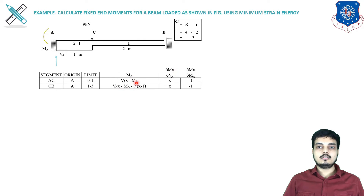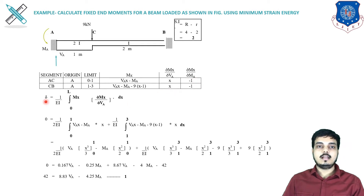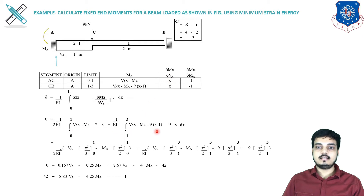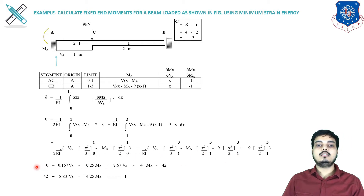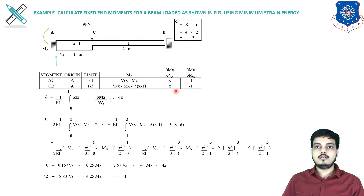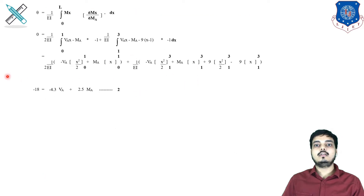The derivative with respect to VA gives x for both segments, and with respect to MA gives −1. Using the integration formula — integration of MX multiplied by ∂MX/∂VA — we apply limits 0 to 1 for the first segment and 1 to 3 for the second. The second moment of area is 2I for the first segment and I for the second, giving factors 1/(2EI) and 1/(EI). After integrating and applying limits we get an expression in terms of VA and MA, forming equation number 1.